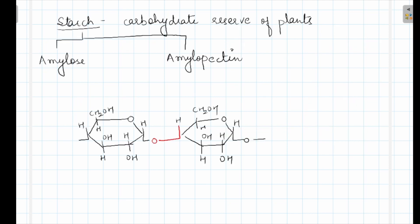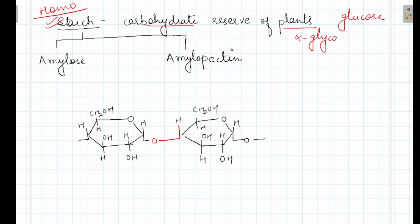Next is the example of homopolysaccharide — starch. Starch is the carbohydrate reserve of plants. In plants, carbohydrate is reserved in the form of starch. It contains glucose units. These glucose units are attached by glycosidic linkage. The linkage is called alpha glycosidic bond. Glucose units are attached by alpha glycosidic bond. It is also called glucan. It consists of two polysaccharide components: first is amylose and second is amylopectin.